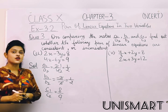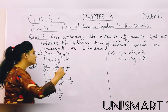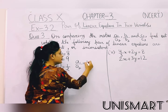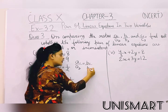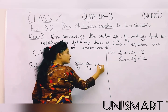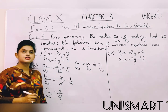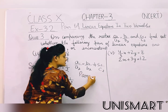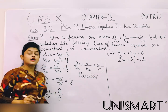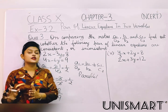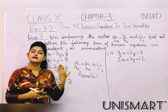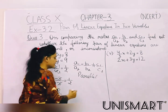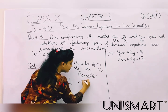Now, c1 upon c2 is not equal. So a1 upon a2 is equal to b1 upon b2, but not equal to c1 upon c2. This condition means our lines are parallel. In the parallel case, we get no solution because the lines do not intersect. So these are our inconsistent lines — parallel lines are inconsistent.